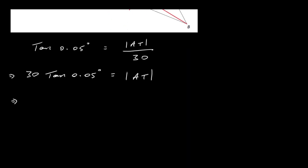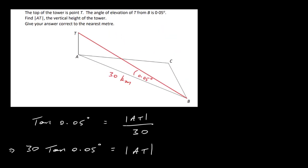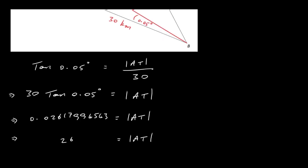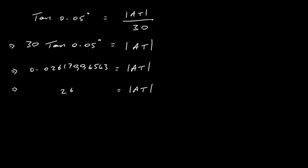Calculating: AT equals 0.02617994... kilometres. Converting to metres by multiplying by 1,000, and rounding to the nearest metre, AT equals 26 metres. And that's the answer to this particular question.